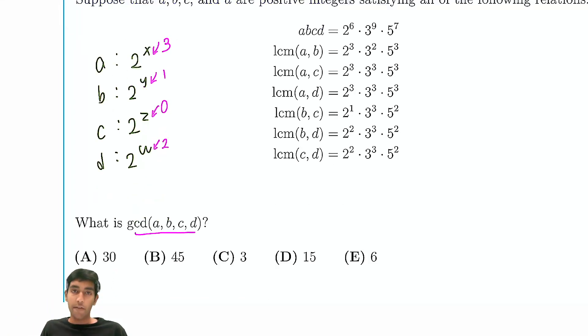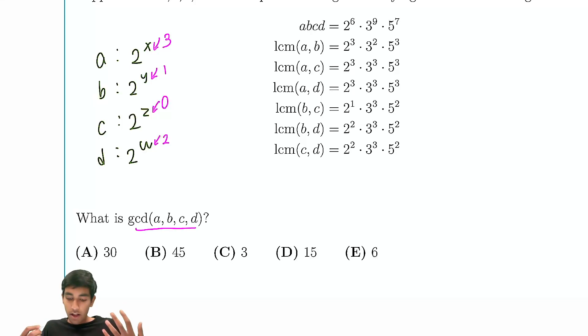But then what's GCD of ABCD? At least for the prime factor of 2? That's 1. So, GCD of ABCD is not going to have a factor of 2. We can automatically cross out these choices.